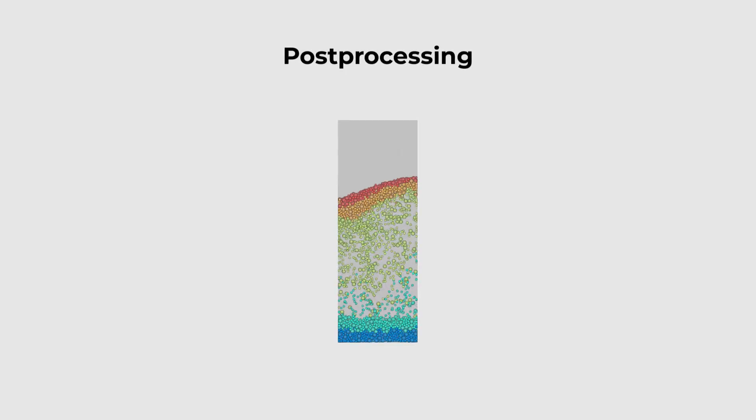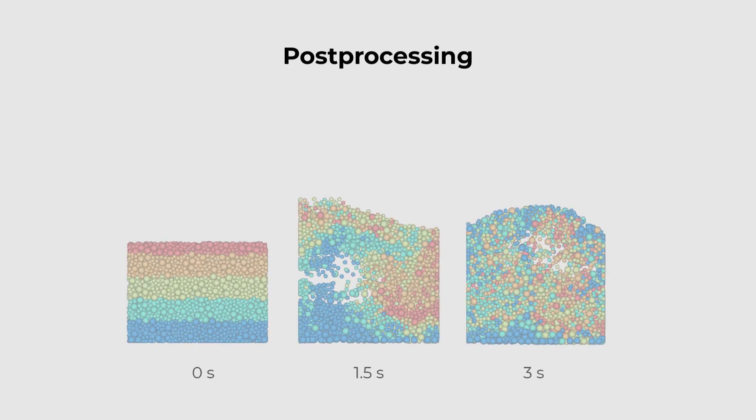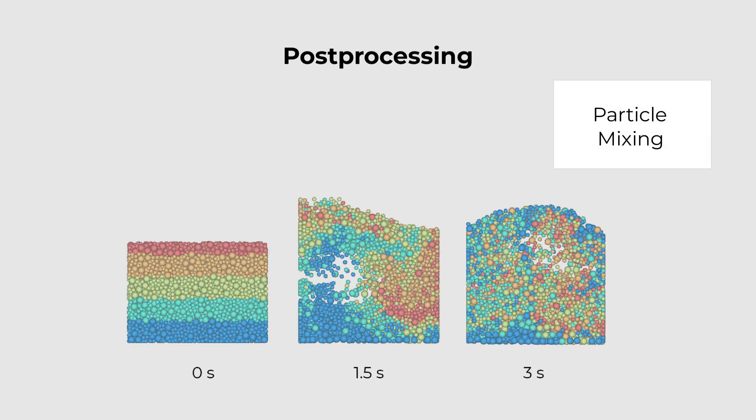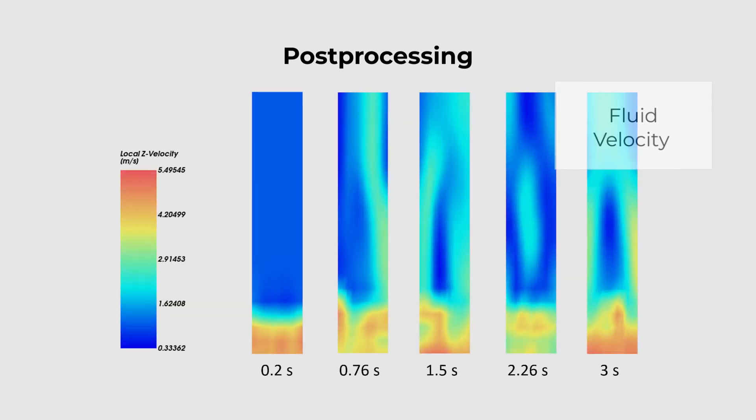After the simulation is finished processing, here are some post-processing examples of a DEM-CFD coupled simulation. It's possible to analyze the mixing of particles due to airflow, to analyze variations in temperature for both particles and fluid, or even to visualize fluid velocity and how this property varies along the simulation.